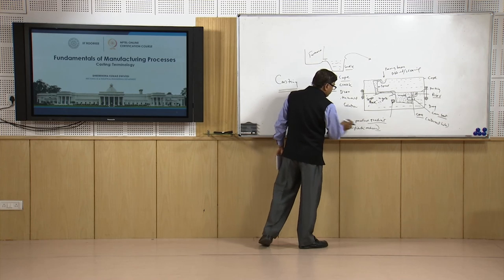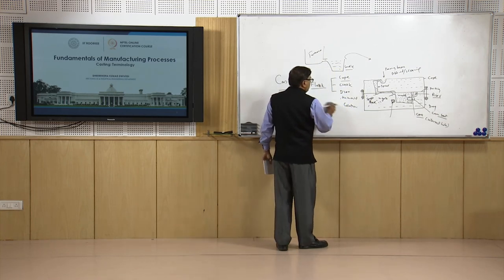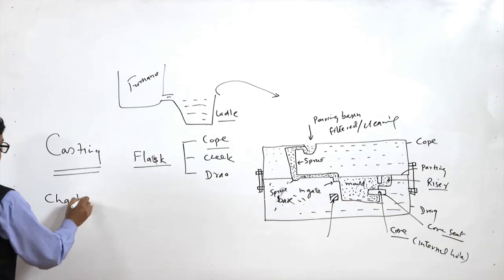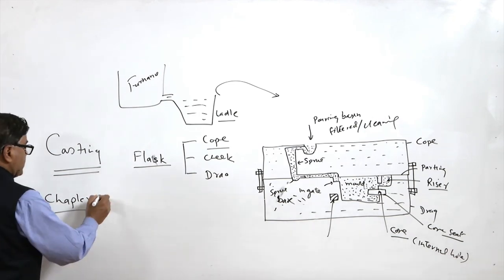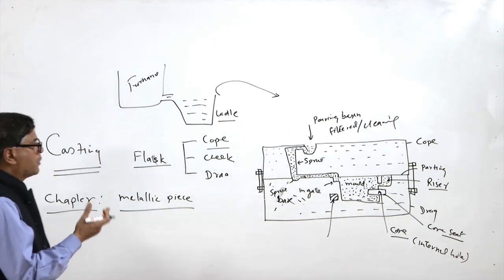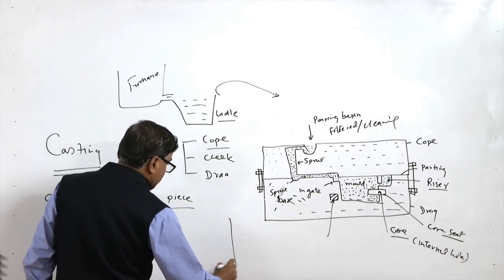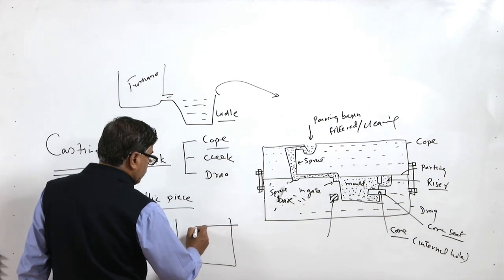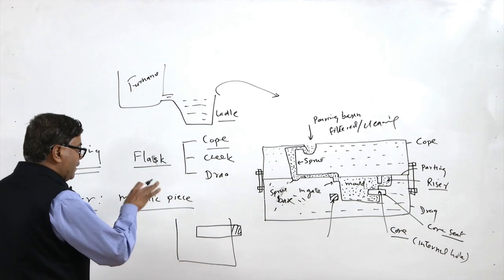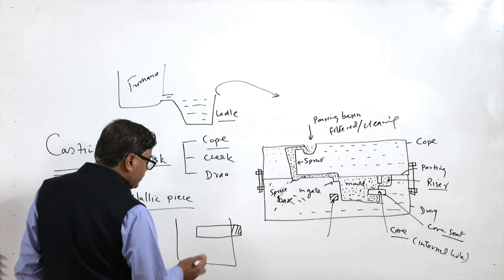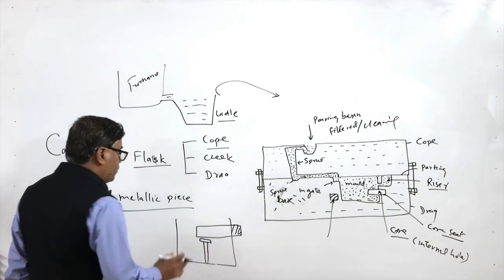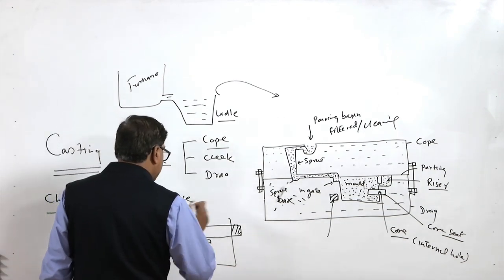Another common term is the chaplet. A chaplet is a metallic piece used to support the core inside the mould cavity. Where the core seat is limited and the overhang is large, the mould will tend to settle down or fracture. To provide suitable support, metallic pieces are kept in the mould so that they support the core and its position is not disturbed when molten metal is poured into the casting.